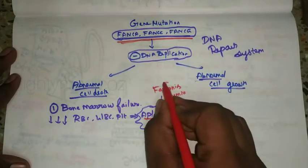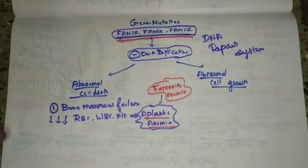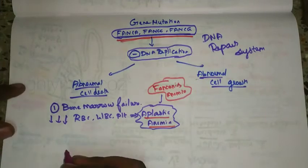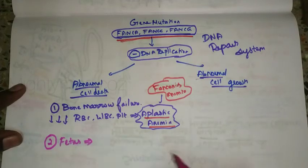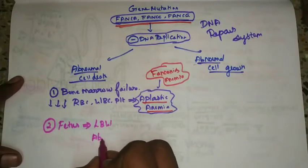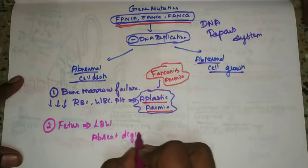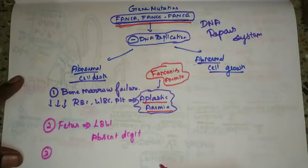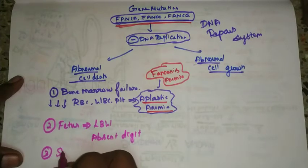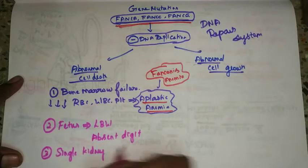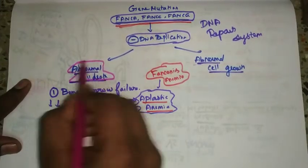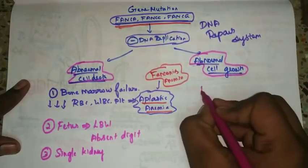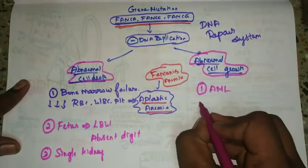In Fanconi's Anemia, because cells are not proliferating normally during fetal development, there is low birth weight. You can also see absent digits in the hands or feet, a single kidney (renal agenesis), and abnormal cell growth can lead to acute myeloid leukemia.